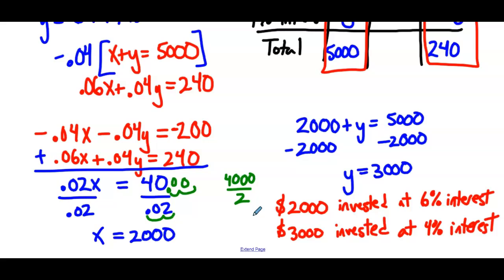So there we have a few more word problems solved with a system of linear equations that were a little more challenging — maybe because we had to create the table, so there was a little extra work. Again, all the word problems we did could be solved with one variable for most of them; we're just giving another option if we want to create a system of equations. Use the table, try to simplify things, and focus on getting from the word problem to the system of equations. Once we're there, it's just solving a system like we've been doing. The key is making sure that system of equations is set up correctly.